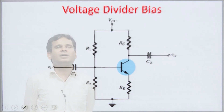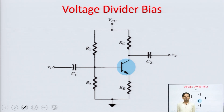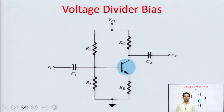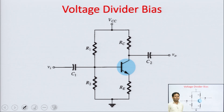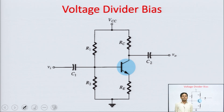The voltage divider bias technique is widely used to design amplifier circuits, whether it is the BJT transistor, JFET, or MOSFET. This biasing circuit technique is widely used because the stability of this biasing circuit is very, very good.